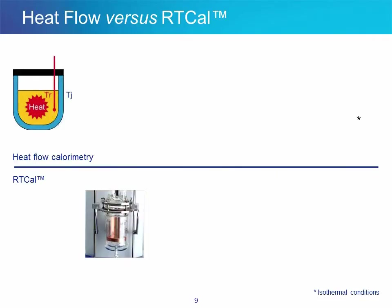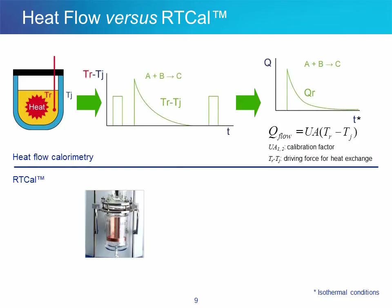Now let's go back to the two methods available on the RC1, namely heat flow and RT-Cal, and make a comparison. For heat flow, the heat coming out of the reaction mixture is an expression of the temperature difference between the reaction and the jacket, as well as the heat exchange area and the heat transfer coefficient characterizing the system. This technique requires knowing what UA is, which makes calibration steps necessary, typically before and after the reaction event. Also, the heat exchange area A has to be visually determined regularly during the reaction, so you have to wait until the final calibration is done before getting quantitative data.